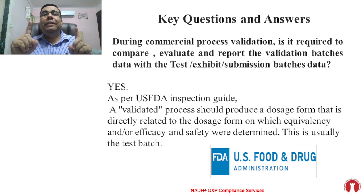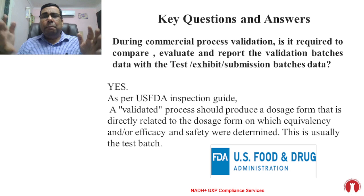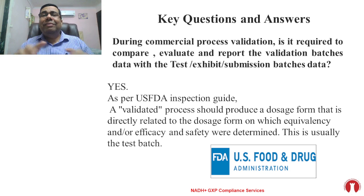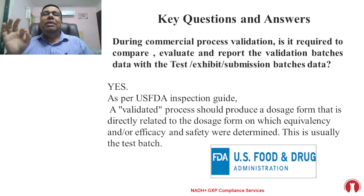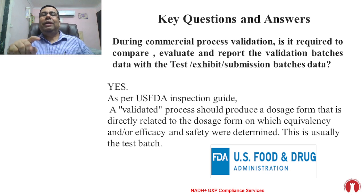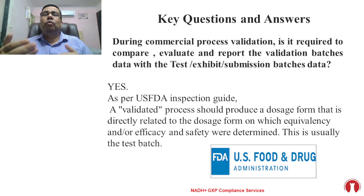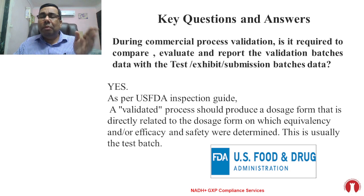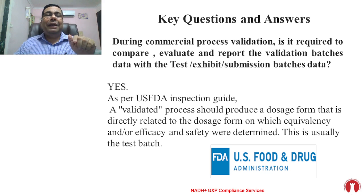Many companies lack this. They focus only on critical process parameters and critical quality attributes, compile them into a report, but this is not sufficient. As per FDA, a validated process should produce a dosage form that is directly related to the dosage form on which equivalency and/or efficacy and safety were determined. This is usually the test batch. So we have to compare all data with the test, exhibit and submission batches, and that comparison must also be reported in the validation report.